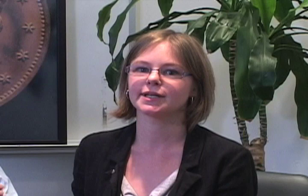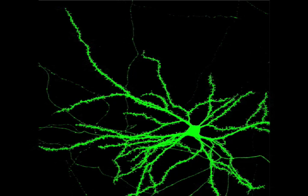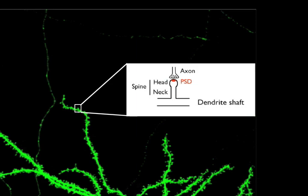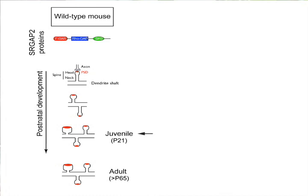In the mouse cortex, SRGAP2C is highly expressed in the first week after birth, which is a period that is very important for synapse formation, and we found that ancestral SRGAP2 accumulates in dendritic spines, which are small protrusions along the dendrites that are the main site of excitatory synaptic contacts in the neocortex. So we then decided to address the function of SRGAP2 in spines. In vivo, wild-type mice already show mature spine morphology and density about three weeks after birth, so when they are still juveniles.